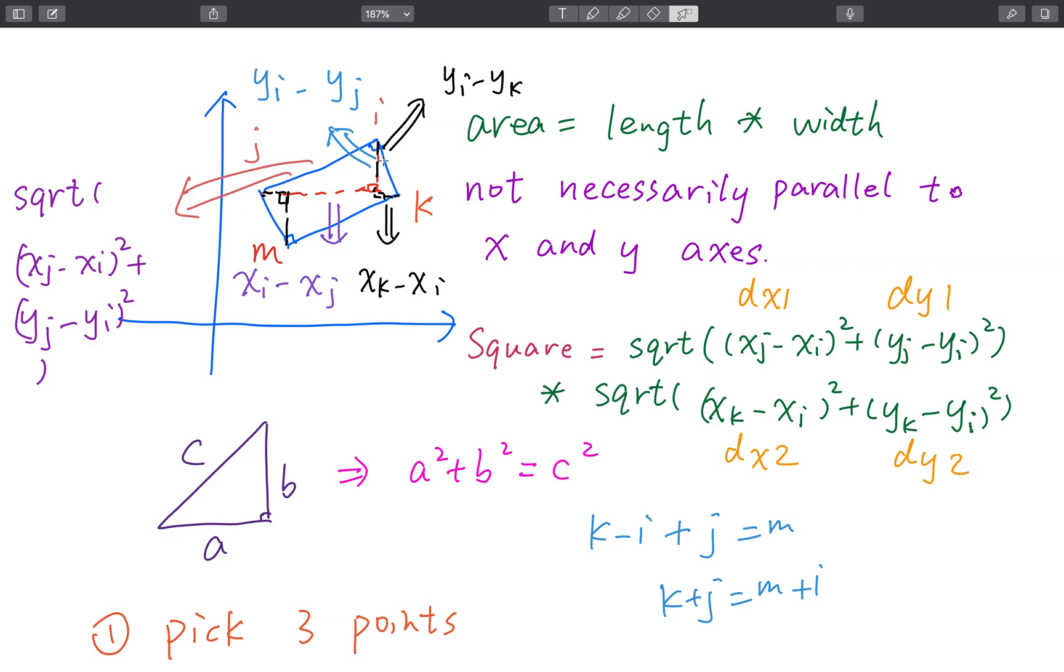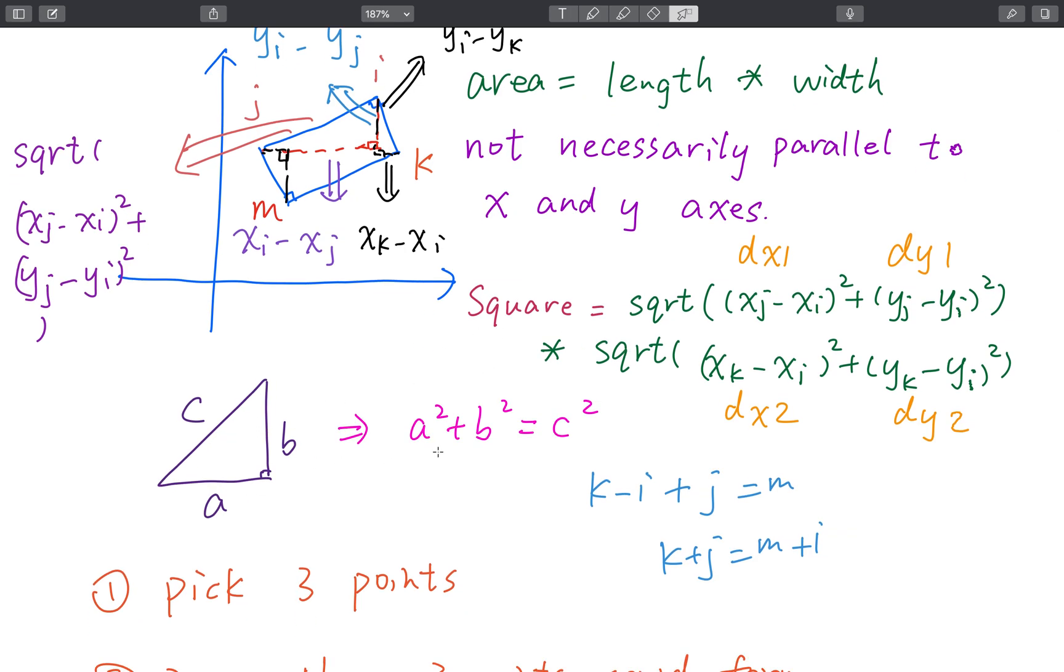We can call this XJ minus XI DX1 because we will use this afterwards, and we call it DY1. This is DX2, this is DY2, which is XK minus XI and YK minus YI. This is according to this formula. Assume this angle is 90 degrees, then we can get A squared plus B squared equal to C squared.